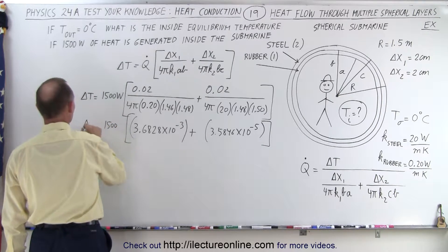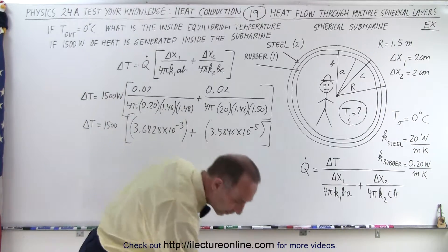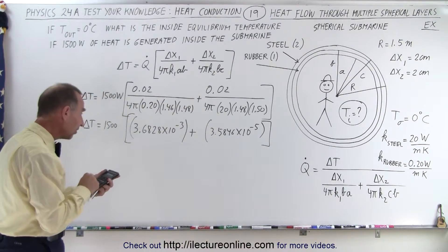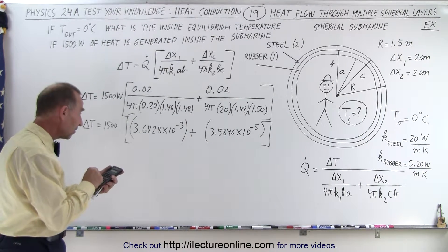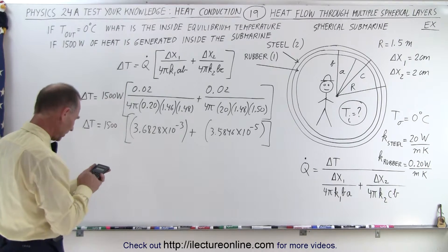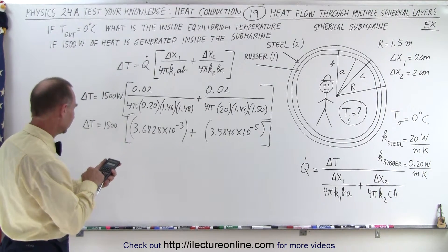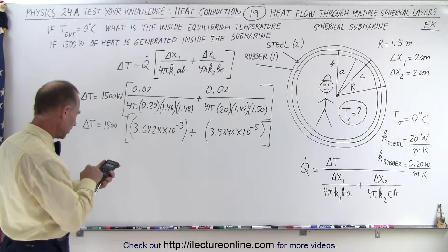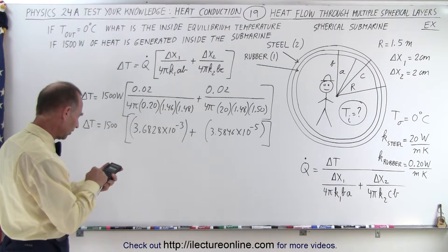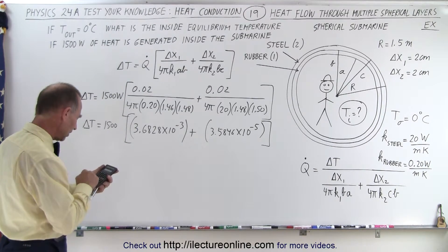3.5846 times 10 to the minus 5, and this is going to be multiplied times 1,500, and that will give us the delta T. Notice I just leave off the units to keep it a little bit cleaner, so we're going to add that, so plus 3.58, oh, I already had it on my calculator, should have kept it. Well, anyway, 3.6828 e to the 3 minus, plus 3.5846 e to the 5 minus, equals, times 1,500.